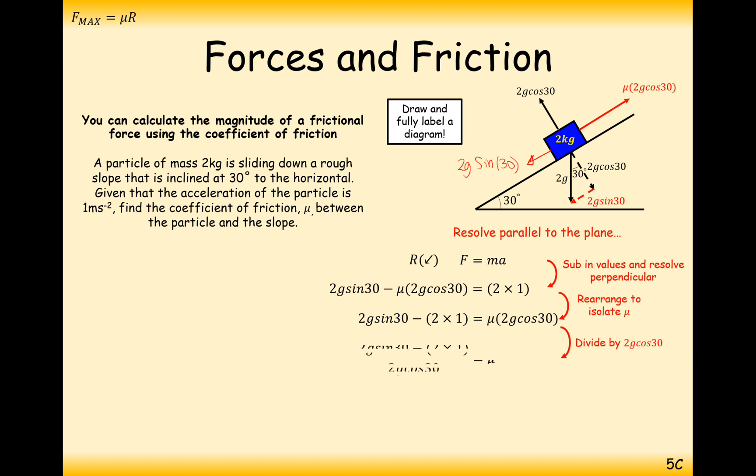Move things from one side to the other, divide by the 2g cos 30, and hopefully we're going to get a value in between 0 and 1. We get 0.46 then that sounds like a good value of mu to me. Anything outside of 0 to 1, be a little bit suspicious and just double check your workings that you've got that correct.